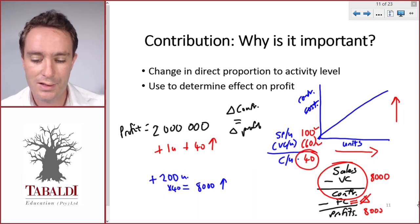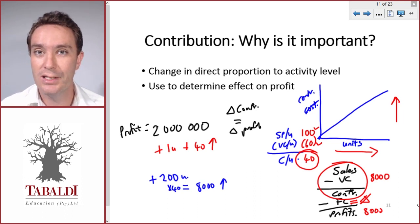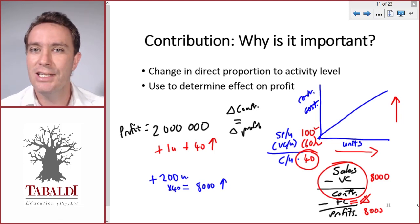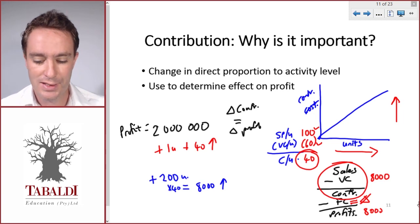When we calculate, if we know what the contribution per unit is, we can very quickly calculate the effect on our profit by multiplying it by the change in units. That will give us the change in contribution, which equals the change in profit.